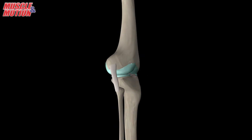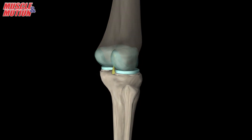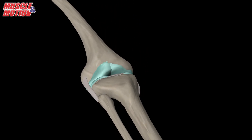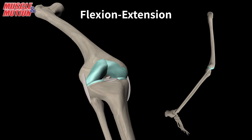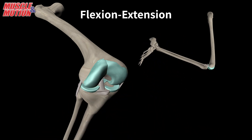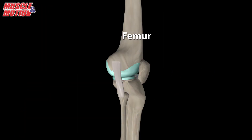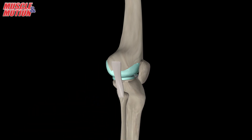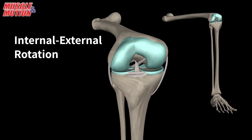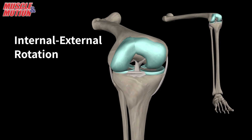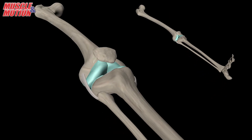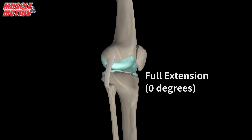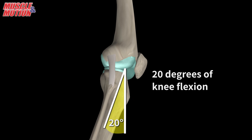The ligaments and menisci provide static stability, while the muscles and tendons provide dynamic stability. The main movement of the knee is flexion and extension — for that matter, the knee acts as a hinge joint whereby the articular surfaces of the femur roll and glide over the tibial surface. During flexion and extension, the tibia and patella act as one structure in relation to the femur. The knee joint also includes some rotational movement between the femur and the tibia. This rotational movement is part of the screw-home mechanism, which is a key element of knee stability. It occurs at the end of knee extension, between full extension at zero degrees and 20 degrees of knee flexion.